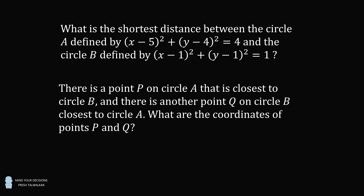Part two: there is a point P on circle A that is closest to circle B, and there is another point Q on circle B that is closest to circle A. What are the coordinates of points P and Q?